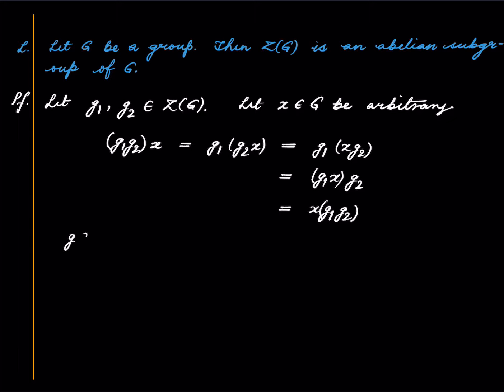Similarly if g is in the center then g inverse is in the center. I leave this as an exercise. So this shows that Z of G is a subgroup of G. Why is it abelian?